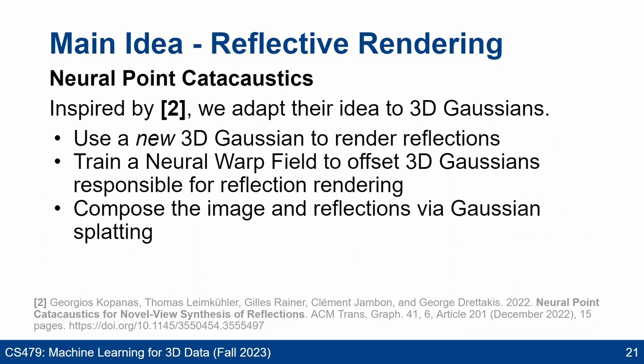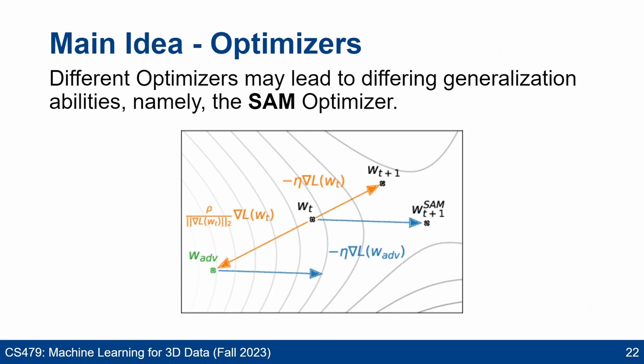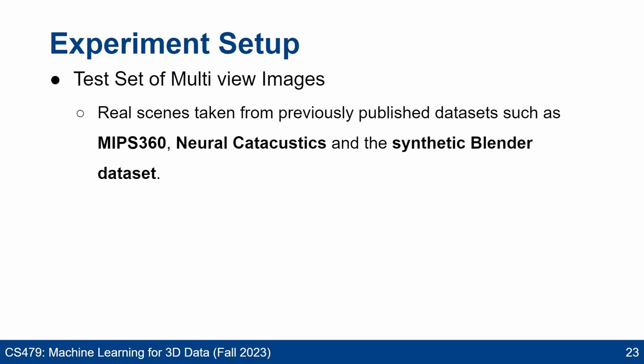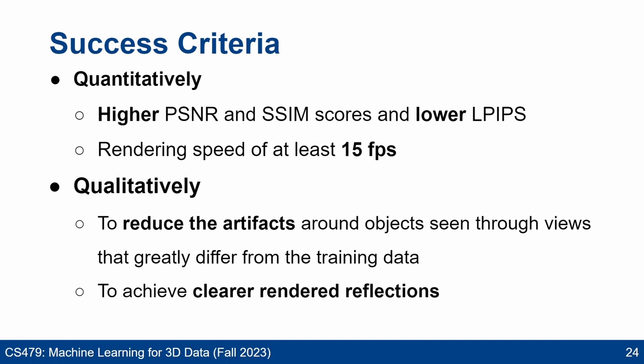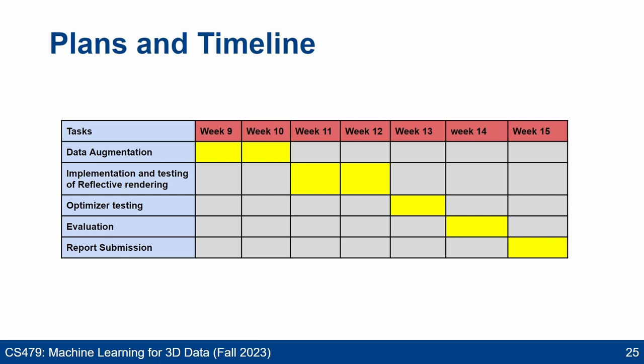For our experiments, we use the MipNeRF 360, neural catacaustics, and synthetic Blender datasets. Quantitatively, we aim to achieve better PSNR, SSIM, and LPIPS, and a rendering speed of at least 15 FPS. Qualitatively, we want to reduce artifacts in rarely seen views and achieve sharper rendered reflections. We plan to spend two weeks each on data augmentation and reflective rendering, one week for optimizer testing, and one week for evaluation and report writing. Thank you for listening.